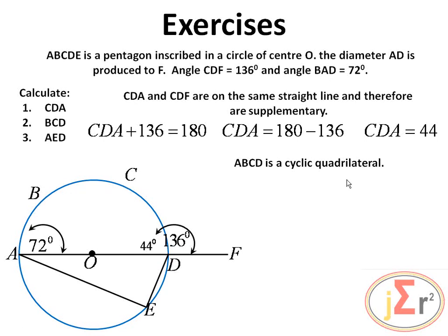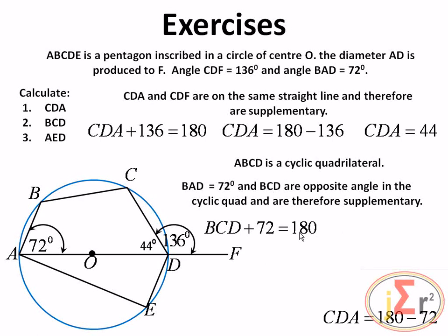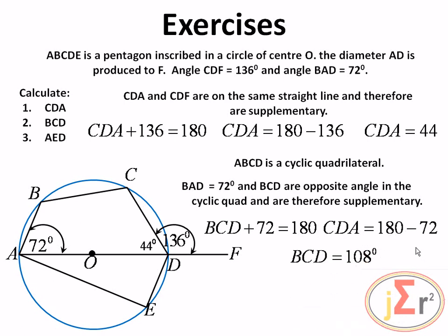To find angle BCD: ABCD is a cyclic quadrilateral, so opposite angles are supplementary. Angle BAD = 72° is opposite to angle BCD. Therefore BCD + 72° = 180°, giving angle BCD = 108 degrees.